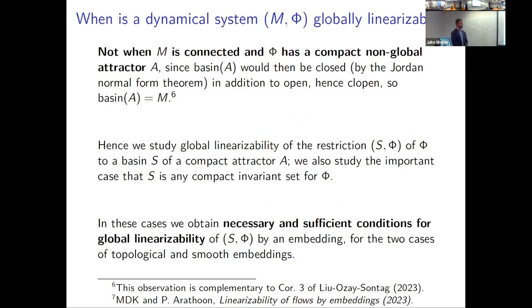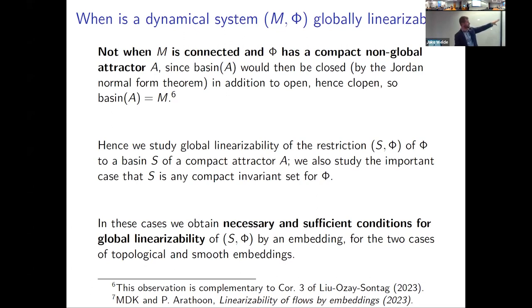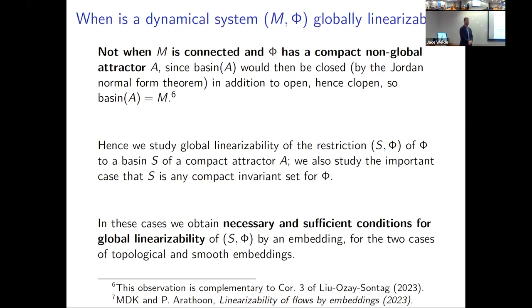A preliminary observation: linearizability is definitely not possible if you have a connected state space and an asymptotically stable set whose basin is not the entire state space. Basins of attraction are always open sets, but by the Jordan normal form theorem, if you embed in a linear system, the basin has to be closed as well. A closed and open subset of a connected space must be the entire space. So a linearizable system with any asymptotically stable set must have it be globally asymptotically stable. Therefore we consider linearizability of basins of attraction, and these results are from a preprint I wrote with my collaborator Philip Arathoon.